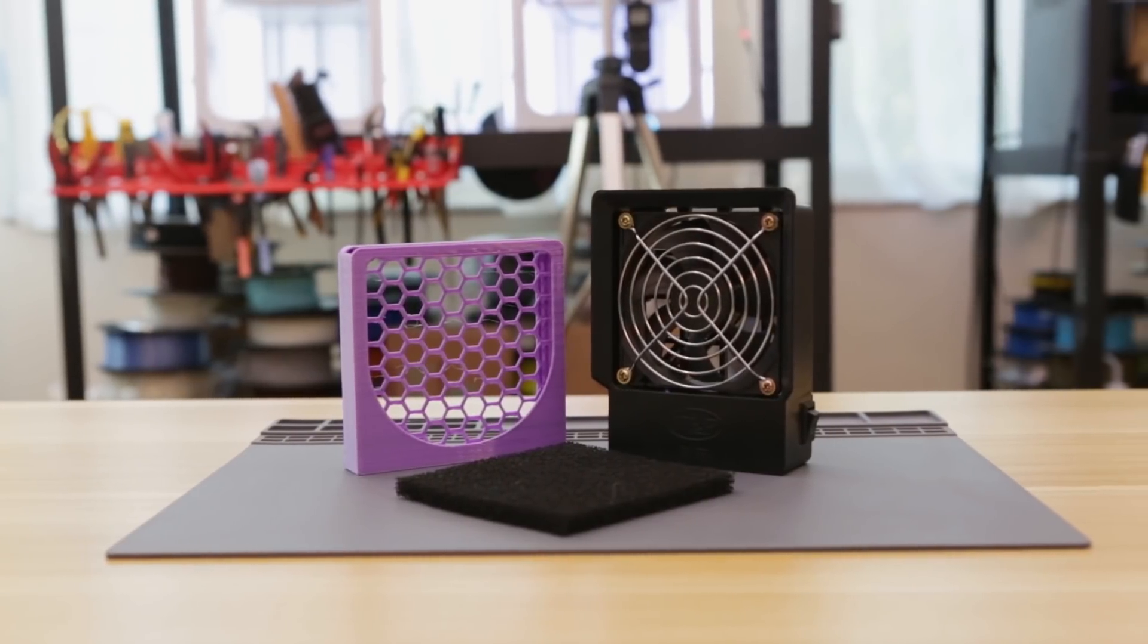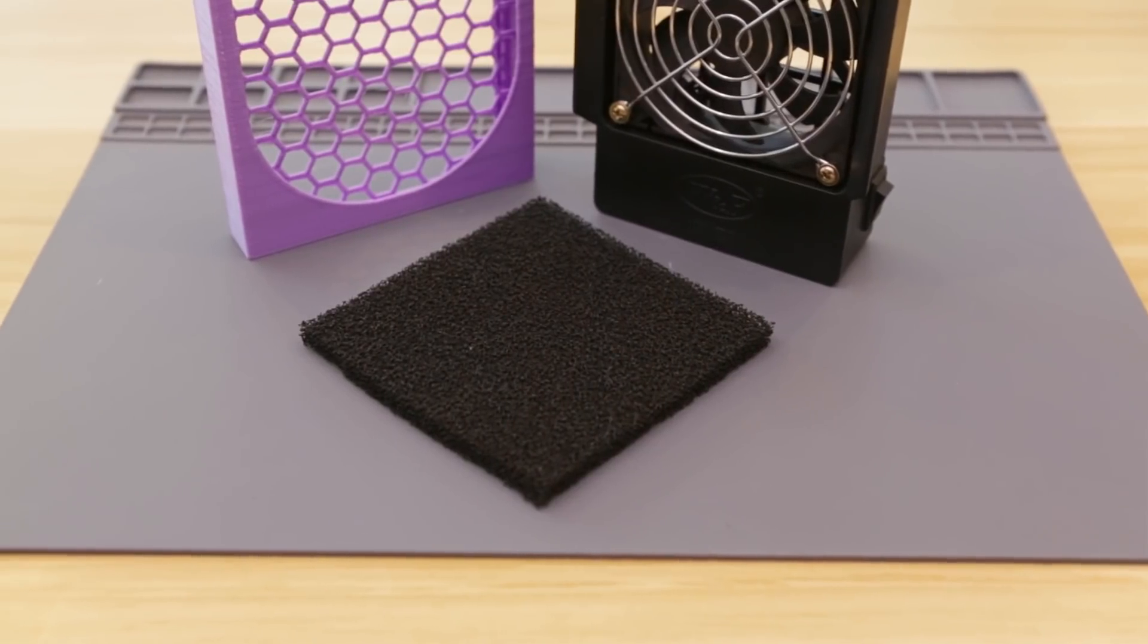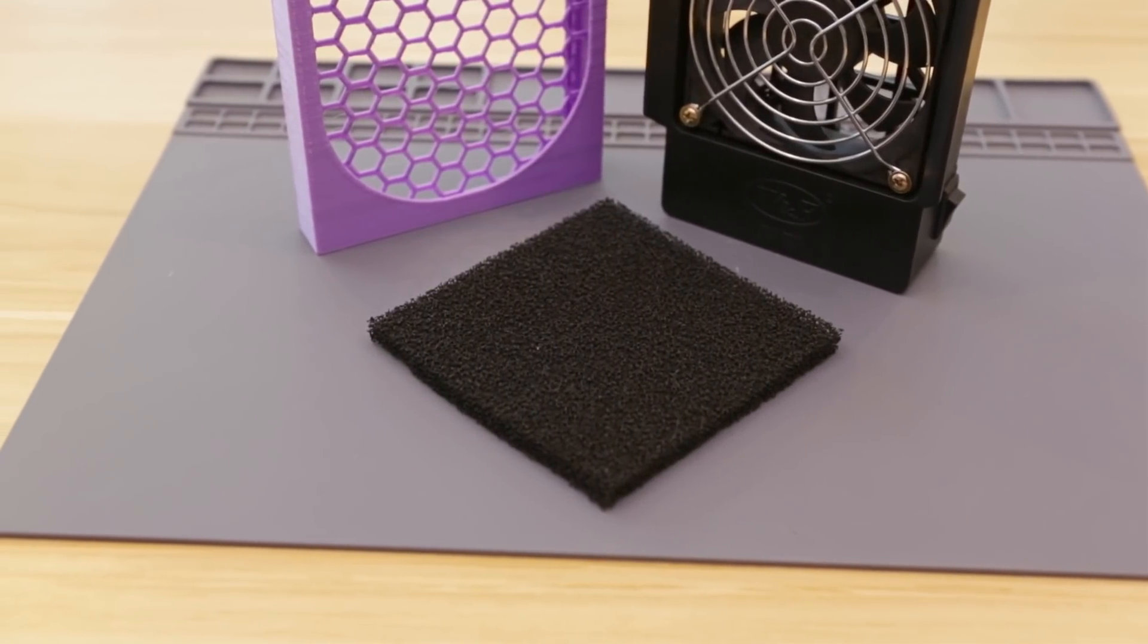Here's how to turn a PC fan into a solder fume extractor using a 3D printed retainer. This carbon filter will catch most of the solder smoke and gets rid of the smell of fumes.